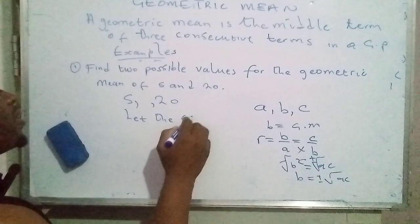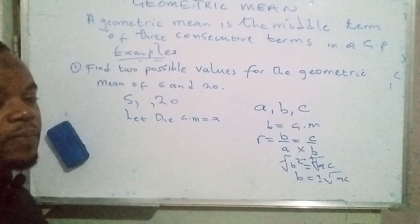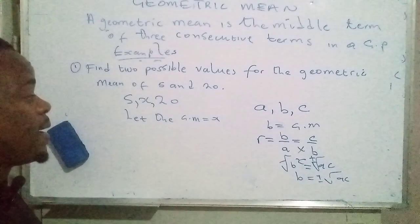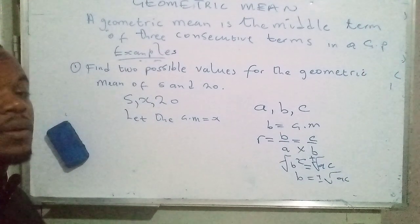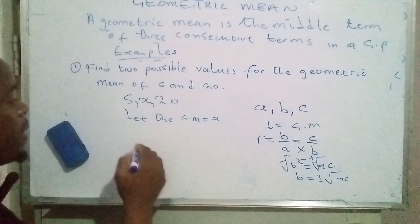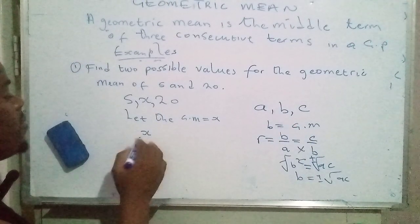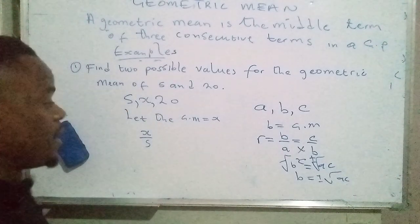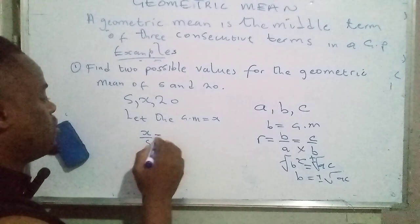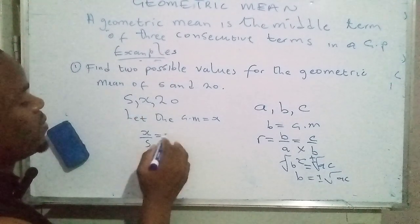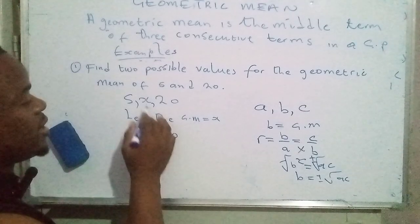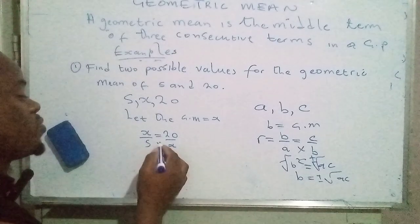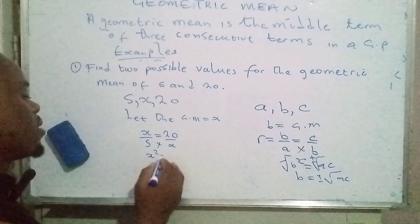Let the geometric mean equal x, so I'll indicate x as the geometric mean. Now to determine this, I'll use what I just demonstrated: second term over first term equals third term over second term. So in this case, x over 5 is equal to 20 over x. From there we can now cross multiply — x multiplied by x gives x squared,